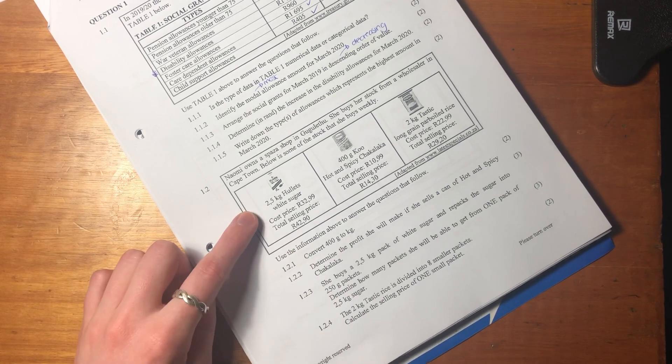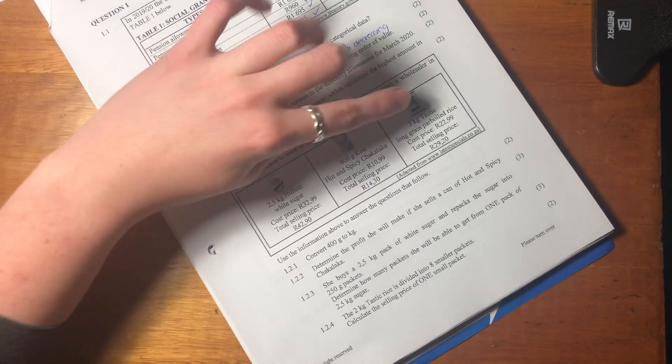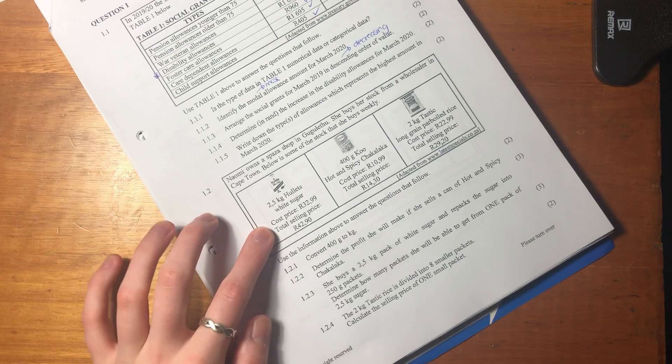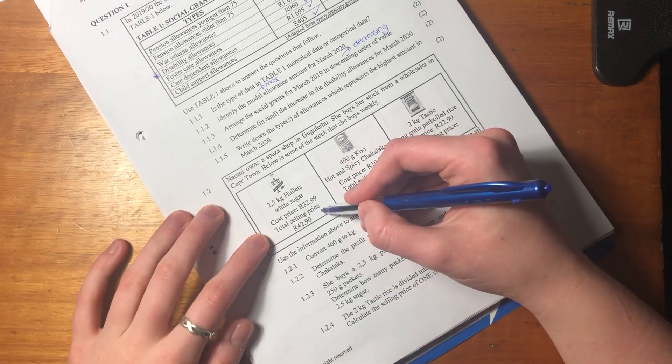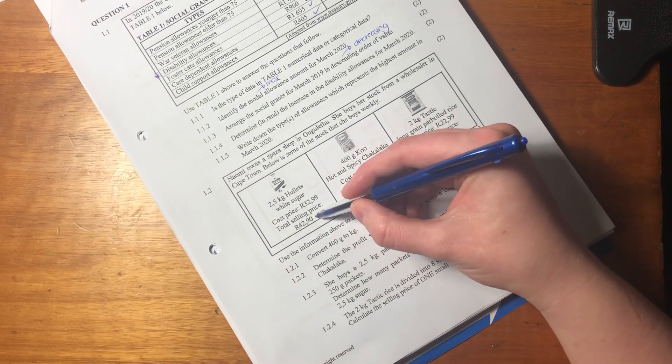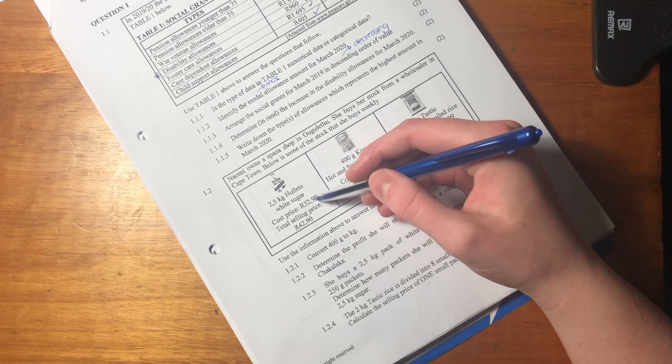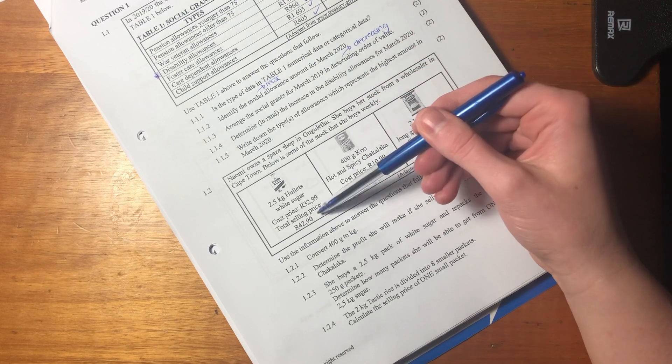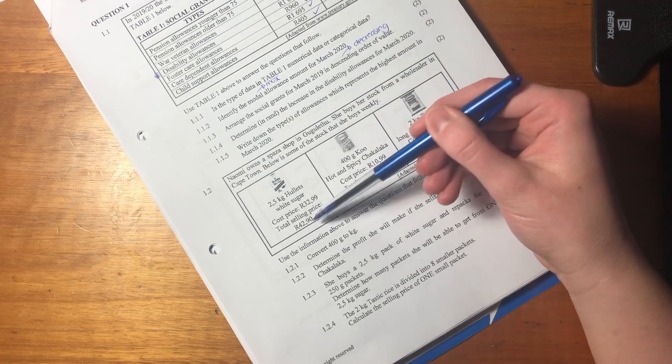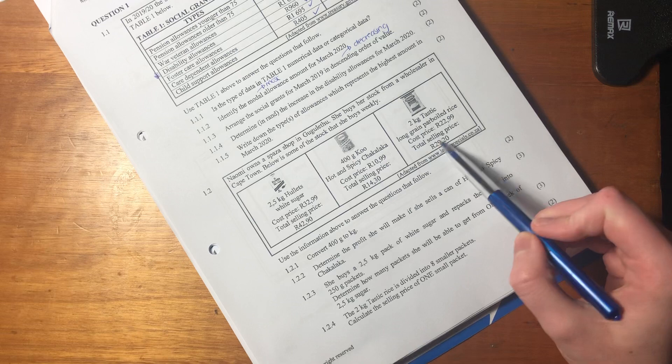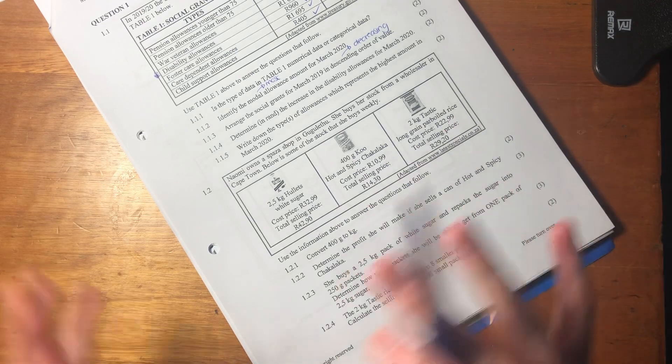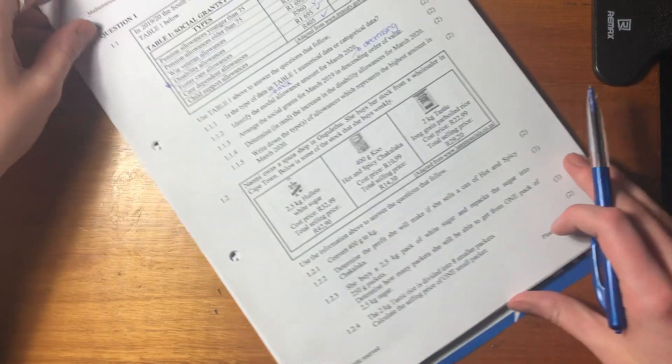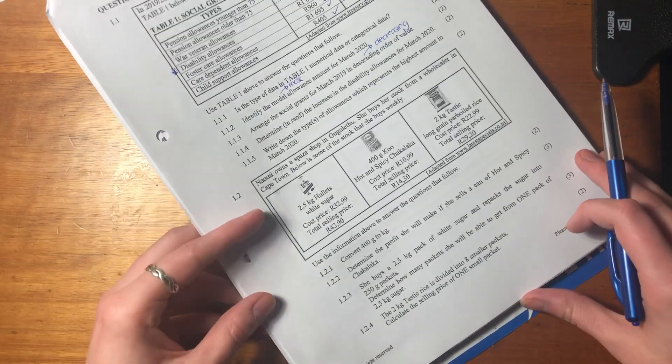She buys some sugar, chakalaka, and rice. What's important here is that they've shown us the cost price and the selling price. The selling price is generally higher than your cost price because there's no point in selling something unless you cover your costs. You generally want to make a profit. This number is always bigger than our cost price, and they're probably going to ask us a couple of questions about that.